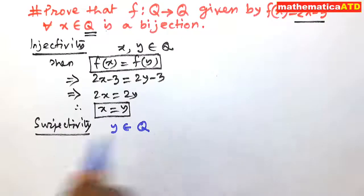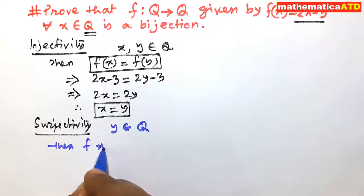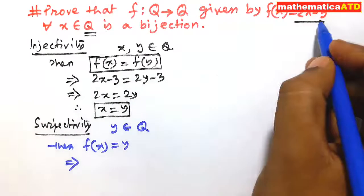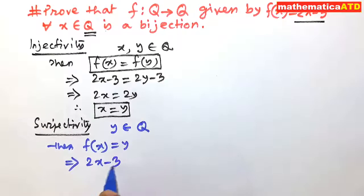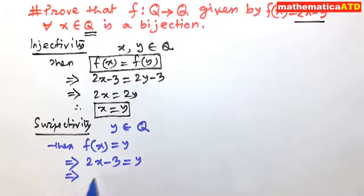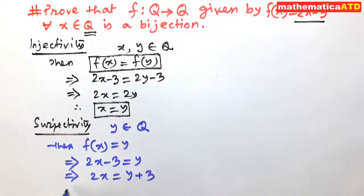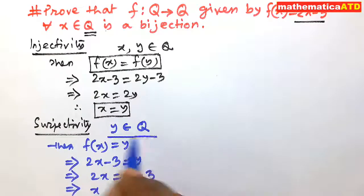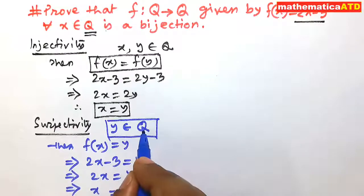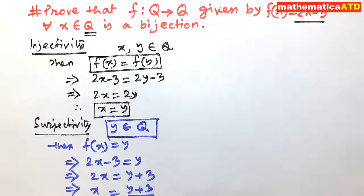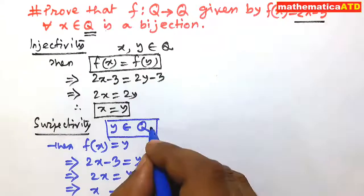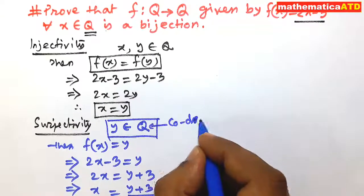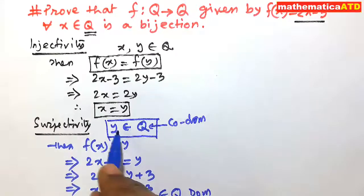Let y belong to Q. Then f(x) = y implies 2x − 3 = y, which gives 2x = y + 3, so x = (y + 3) / 2. It is clear that since y belongs to Q — the codomain — x = (y + 3) / 2 is also a rational number belonging to the domain Q.